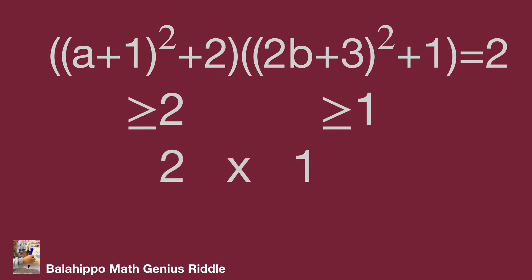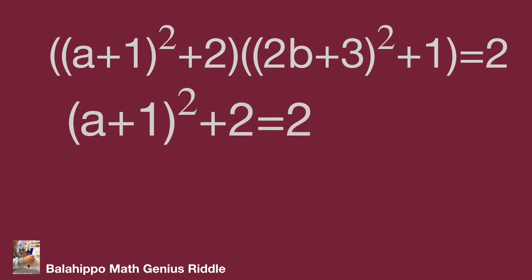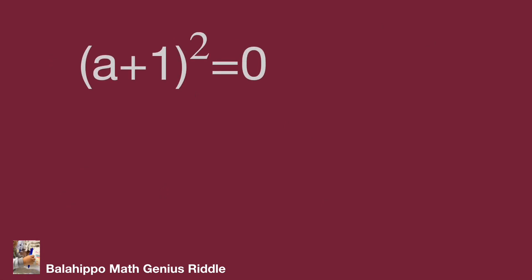We got (a + 1)² + 2 equal to 2, and (2b + 3)² + 1 equal to 1. That is, (a + 1)² equal to 0, and (2b + 3)² equal to 0.